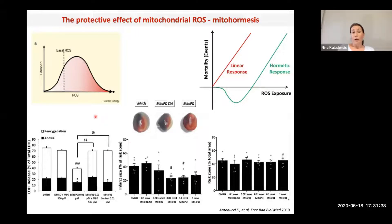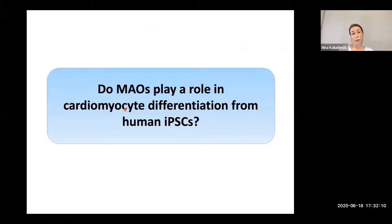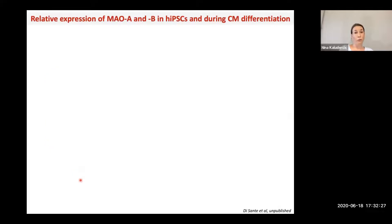A certain low amount of ROS can protect the heart and serve signaling roles. They are also important for maintaining stemness of stem cells, differentiation, organogenesis, and more. We wondered whether in addition to being deleterious in pathological conditions, ROS produced by MAOs could also have a physiological role. To test this, we used a model of cardiomyocyte differentiation from IPS cells and asked whether MAOs could play a role there. It is already known that ROS are necessary for proper cardiomyocyte differentiation, but we wanted to see whether MAOs specifically have a role.